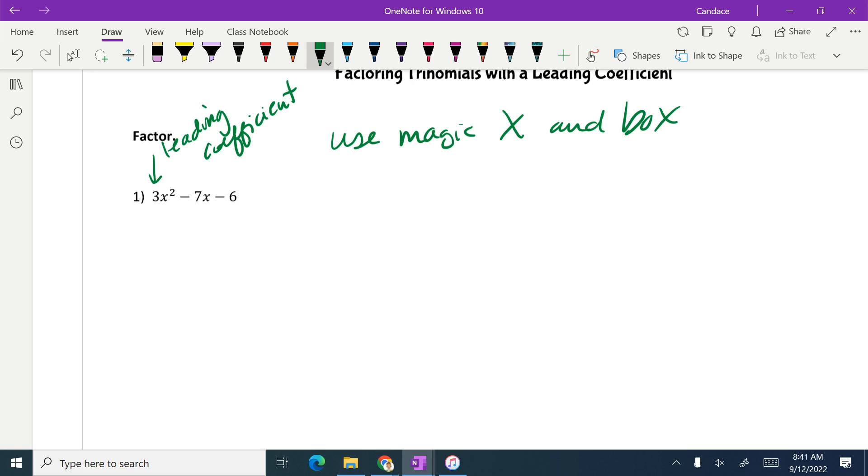So we're going to start with our magic X, just like we did before. Remember, you have to multiply the first and the third. So you multiply this one times this one. We're multiplying those. And it was really weird before because it was just a one. So now it's a number other than one. So it should make sense that we were multiplying them now. So what is 3 times negative 6? Negative 18. Good. The number in the bottom is the same as it was before. So what am I going to put in the bottom? Negative 7. So the only change that's a little bit different than we were doing it before is we multiplied the 3 and the negative 6 together. So far, that's it. That's the difference.